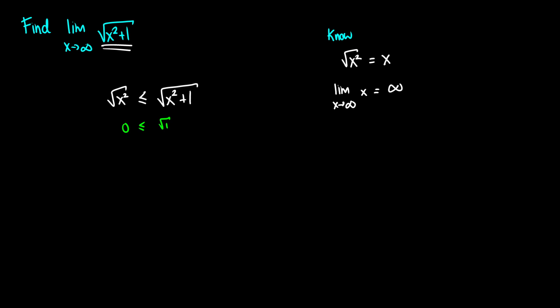For example, if x equals 2 then the square root of 4 is less than or equal to the square root of 5. So x squared plus 1 always grows slightly faster than the square root of x squared. Since the square root of x squared tends towards infinity, and the square root of x squared plus 1 is always greater than or equal to it, this function also has to tend towards infinity. This requires a bit more work because we have to compare it to a function we already know.